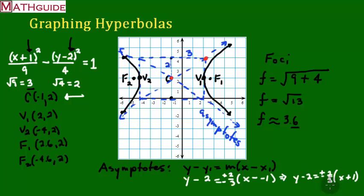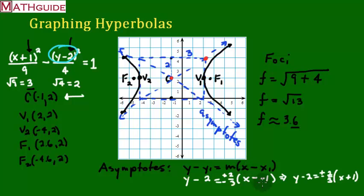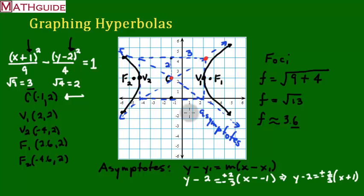You could apply the distributive property and add 2 to both sides, but I'll leave it in this form. That's how you graph a hyperbola — very similar to an ellipse. Go back to MathGuide.com and check out all our videos, lessons, interactive quizzes, and activities. Enjoy.